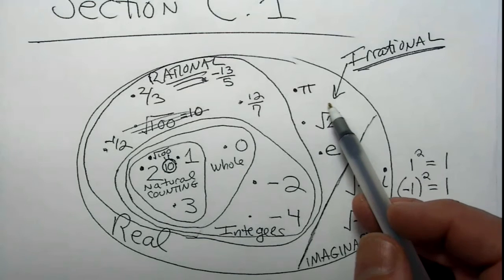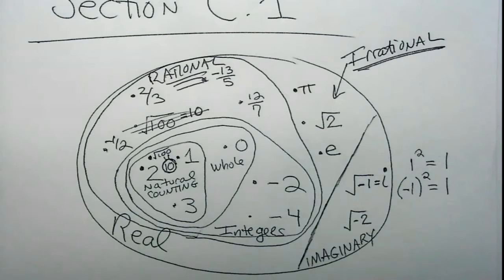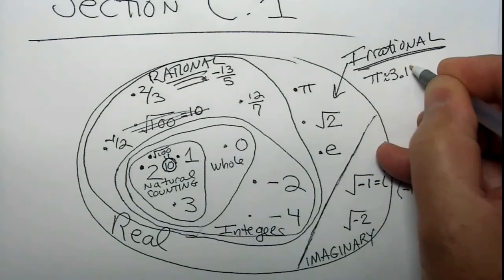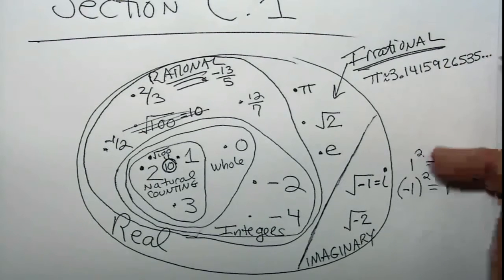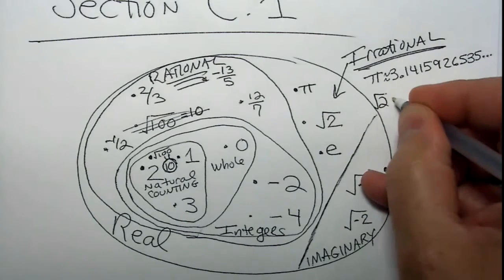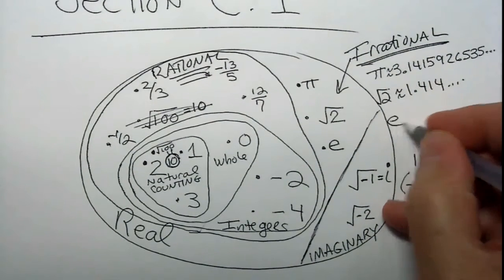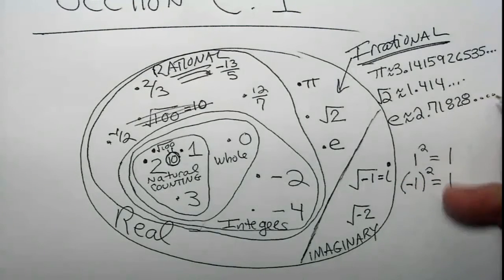There is a very identifiable method for discerning whether a number is rational or irrational. Pi, for example, is 3.141592653 — it goes on and on and on, never terminates. Square root of 2 is approximately 1.414, and it never terminates. E is roughly 2.71828, and it goes on and on and on. Irrational numbers: the decimal portion always goes on forever and it's non-repeating.